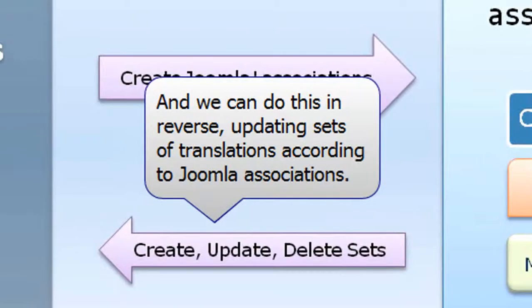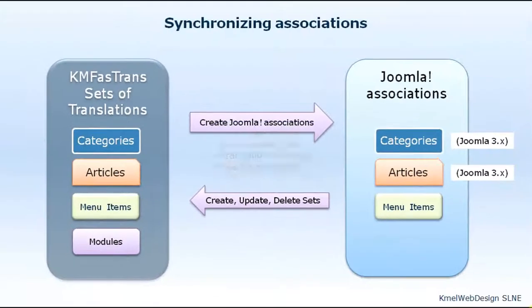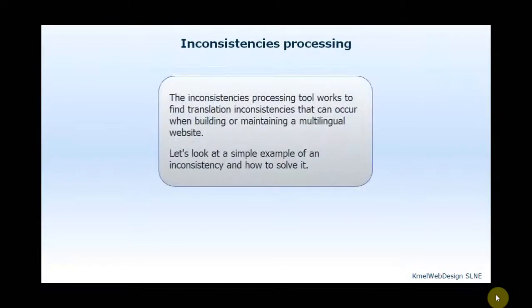And we can do this in reverse, updating sets of translations according to Joomla Associations. Now we'll see how to deal with translation inconsistencies. The Inconsistencies Processing Tool works to find translation inconsistencies that can occur when building or maintaining a multilingual website. Let's look at a simple example of an inconsistency and how to solve it.